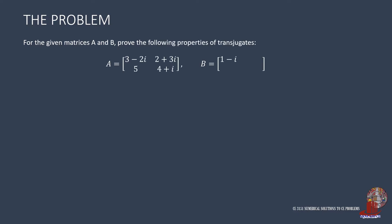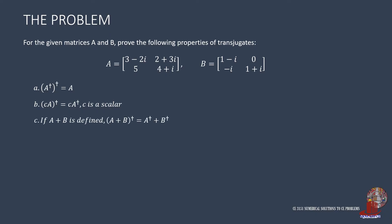The premise is to prove the transjugate properties through the given matrices. First, the transjugate of another transjugate reverts back to the original matrix. The second property involves a scalar — the transjugate of a scalar times a complex matrix equals the scalar times the transjugate of the matrix alone. Third, the transjugate of the summation of two matrices equals the summation of their individual transjugates. The last property states that the transjugate of the product of two matrices equals the product of the transjugates of each matrix.